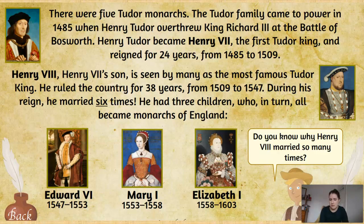Henry VIII, who was Henry VII's son, was seen by many as the most famous Tudor king. He ruled for 38 years, and during his reign we already know he married not once, not twice, but six times. Within those six marriages he had three children who, in turn, all eventually became monarchs of England.